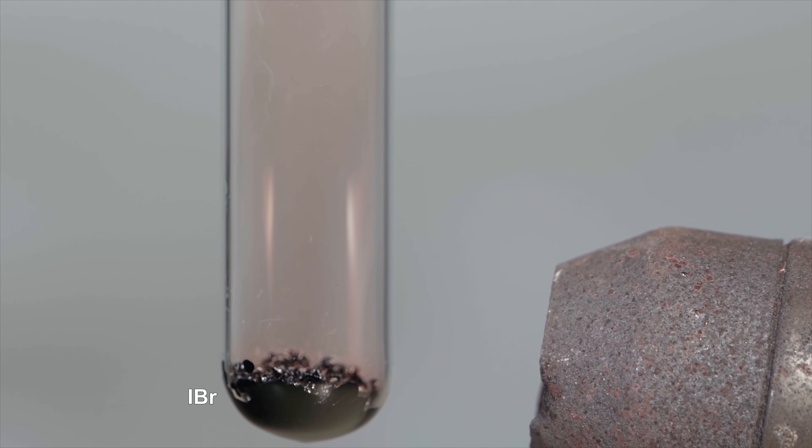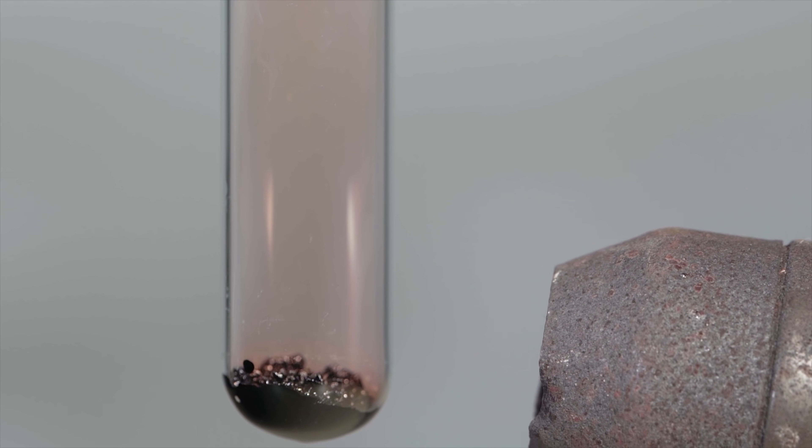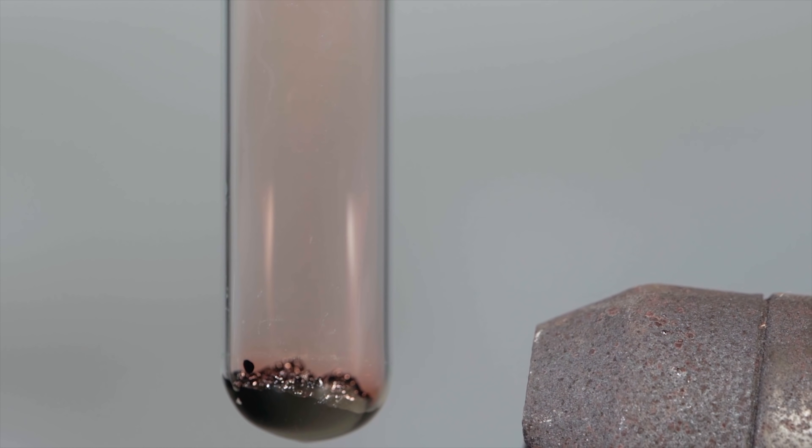You all know that aluminum reacts with bromine and iodine quite violently. So let's check its interaction with iodine bromide.